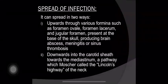How does the infection spread? It can spread upwards through various foramina such as foramen ovale, foramen lacerum, and jugular foramen present at the base of the skull, producing brain abscess, meningitis, or sinus thrombosis. As we saw in the definition, the base of the lateral pharyngeal space lies at the base of the skull, which has many foramina. Infection in the space may spread through these foramina causing brain abscess, meningitis, or sinus thrombosis.